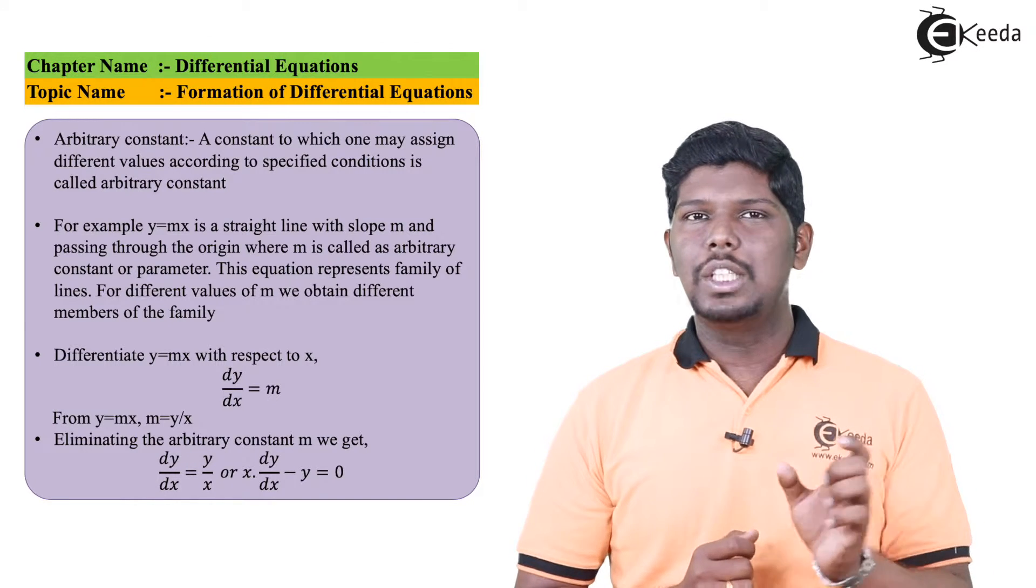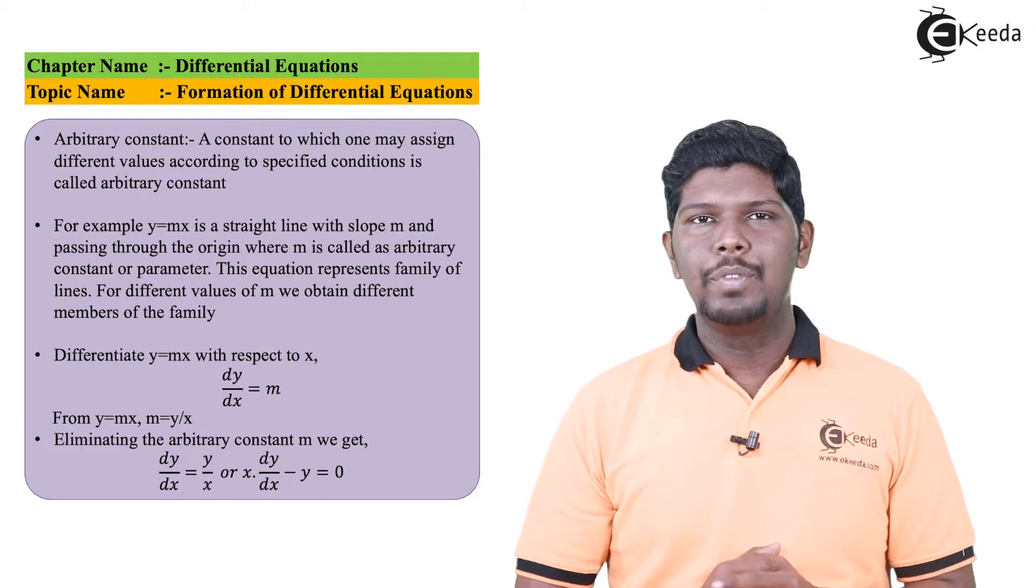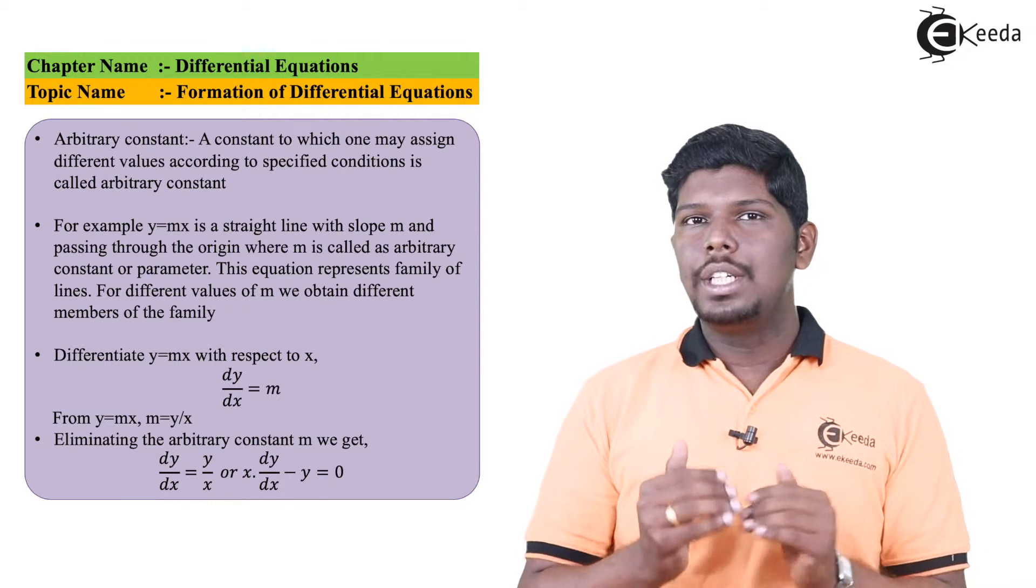Up till now we have only understood the word constant which has a fixed value. If I say the value of g is 9.8 meter per second squared, it is basically a fixed value. But if I say for a particular equation a constant changes, that becomes an arbitrary constant.